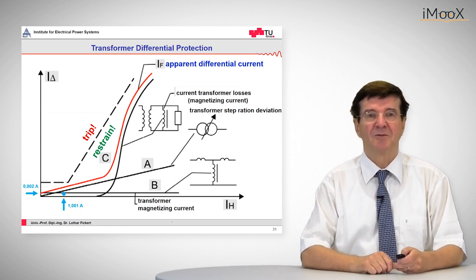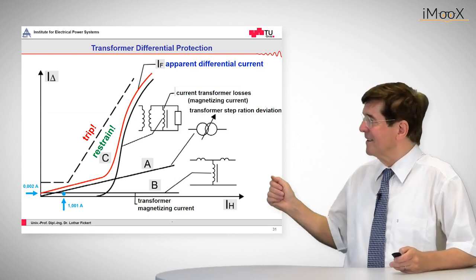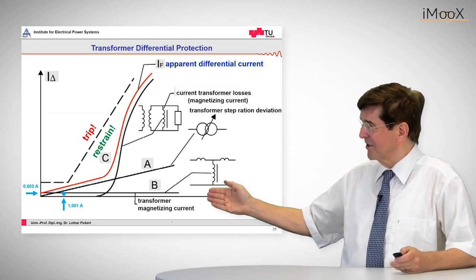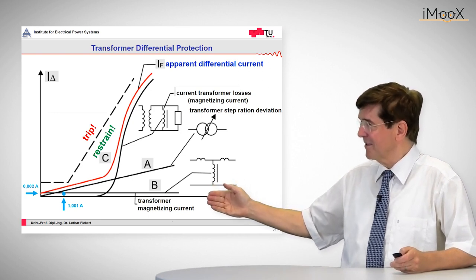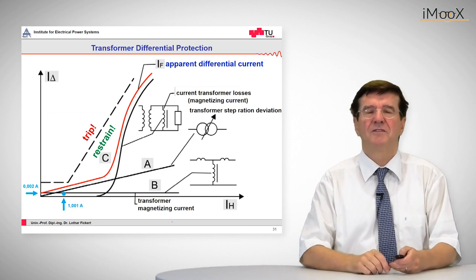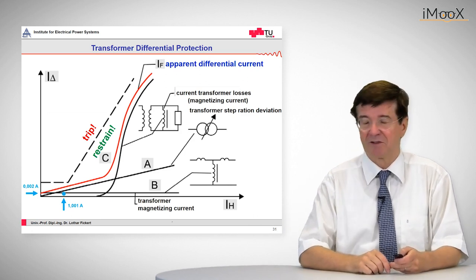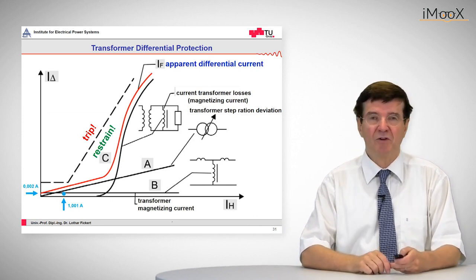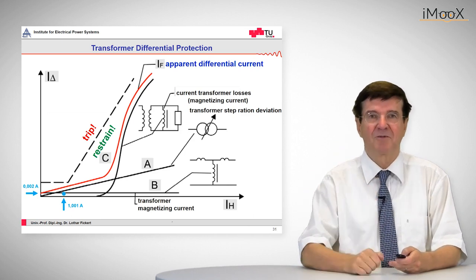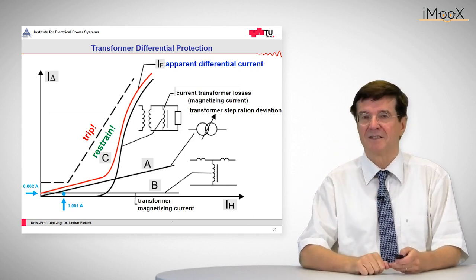In order to demonstrate this, I go back to the example of the magnetizing current of the transformer that we have seen before. So we have here the stabilizing current which is 1.00 amps and a very small differential current of 0.002, and as we can see, the blue dot is below the trip curve and the protection is stable.